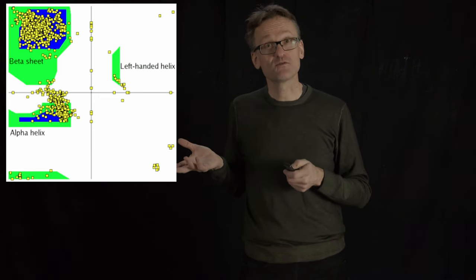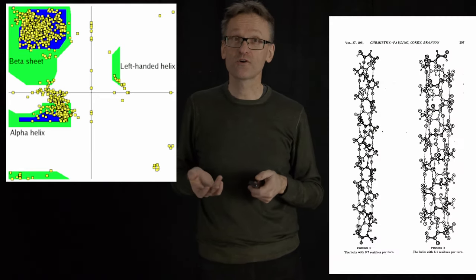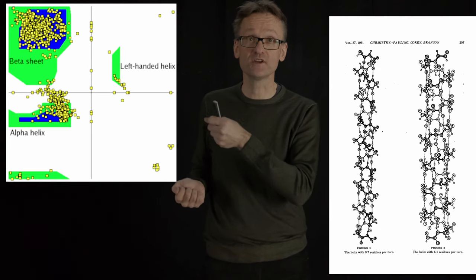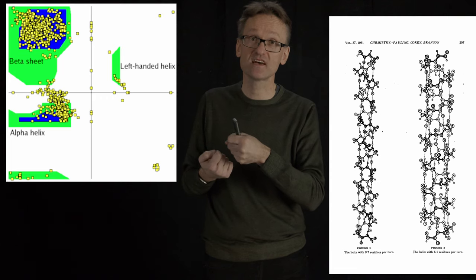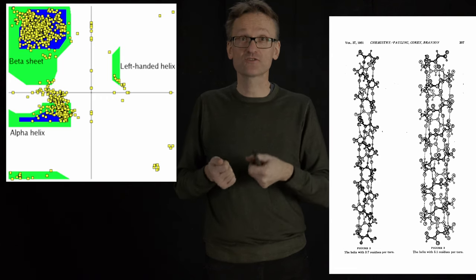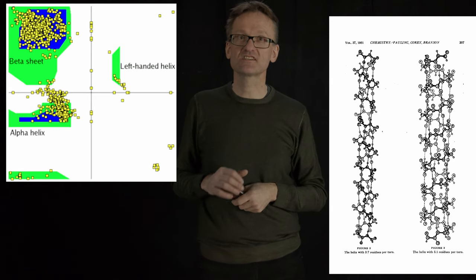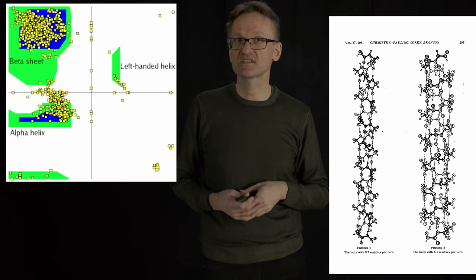In fact, this is one of the reasons why Pauling and Corey were able to predict the existence of the alpha helix. It's simply one of these few regions where we don't have clashes of amino acids and it's a regular structure. So they expected that this must happen in proteins, which it did. There's a second helix here to the right that we'll come back to in a second.